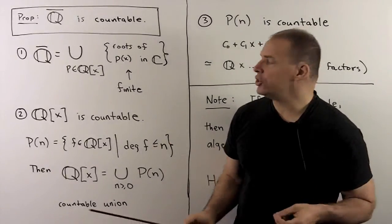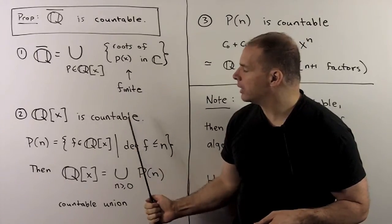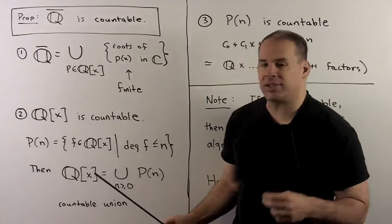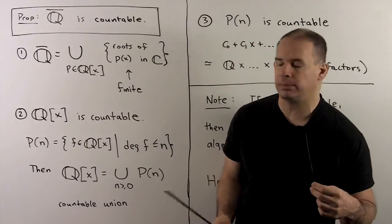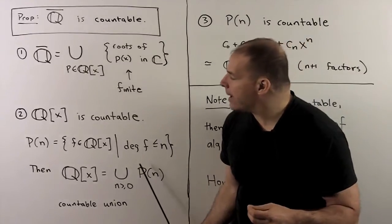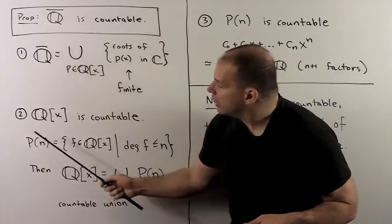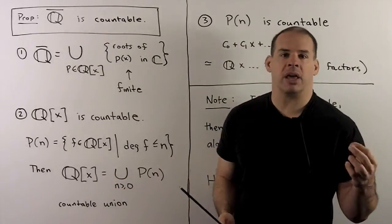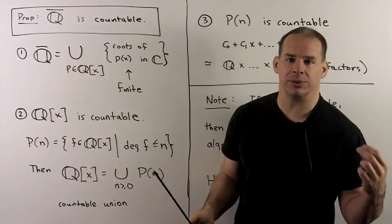That means I need to show that polynomials with rational coefficients are countable. To see that, we write Q adjoint x as a countable union of countable sets. Then it itself is countable. For that, we're going to define for each non-negative integer n, p of n. This is going to be the subset of all polynomials with rational coefficients with degree less than or equal to n.